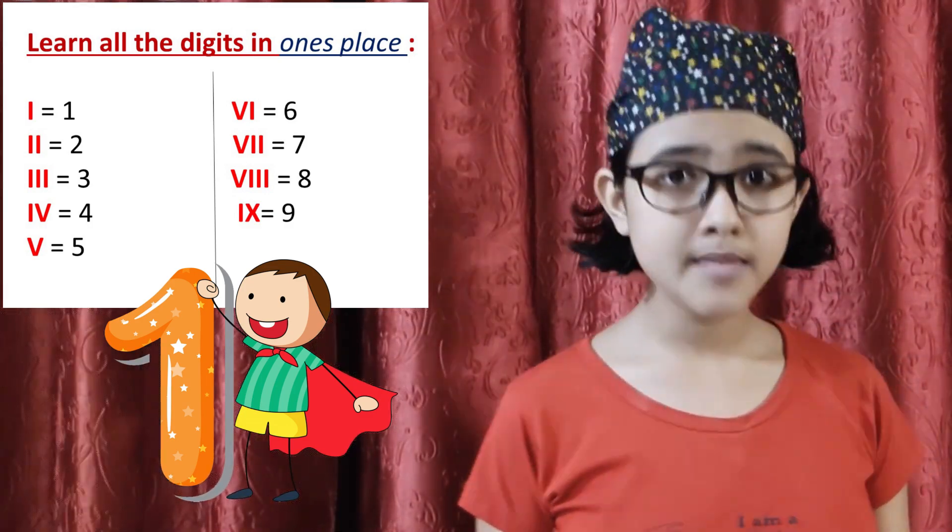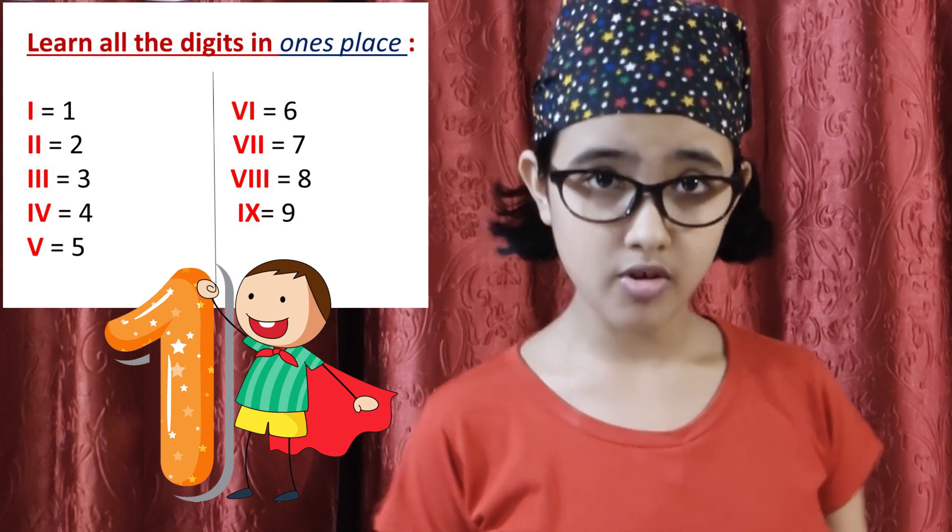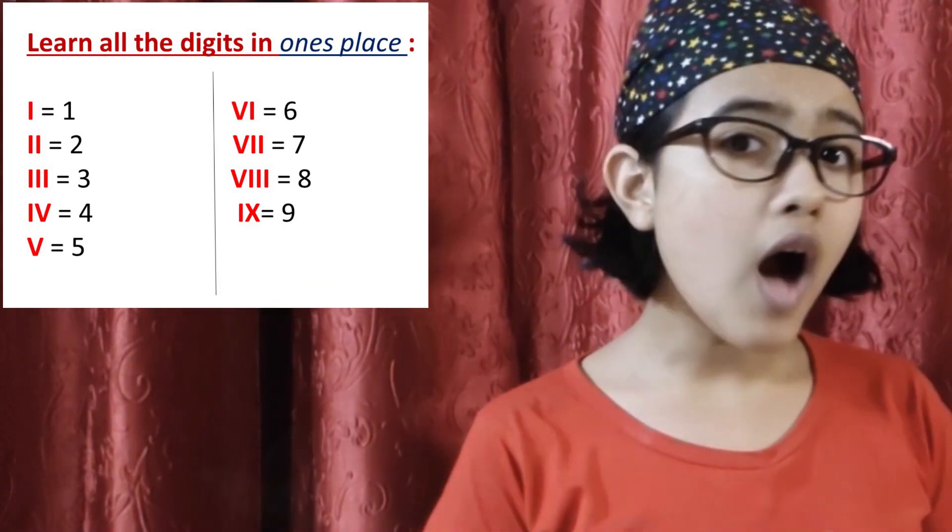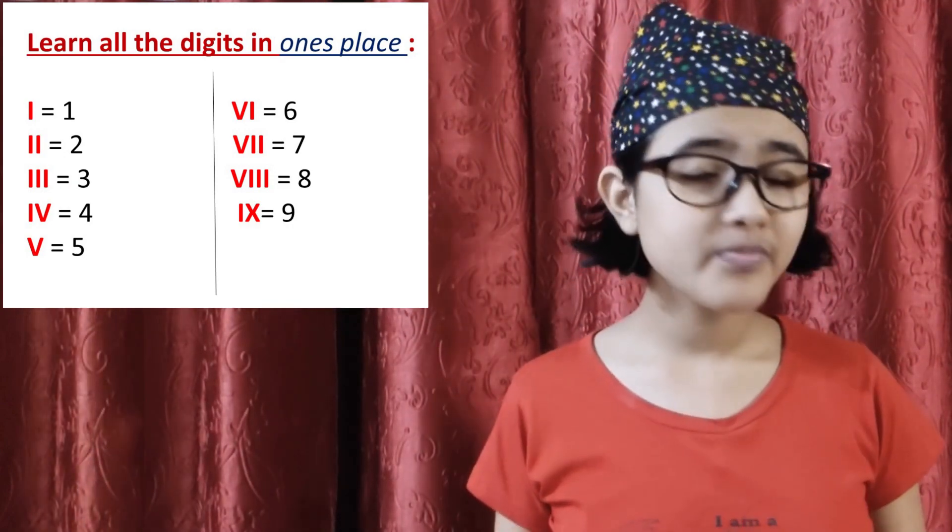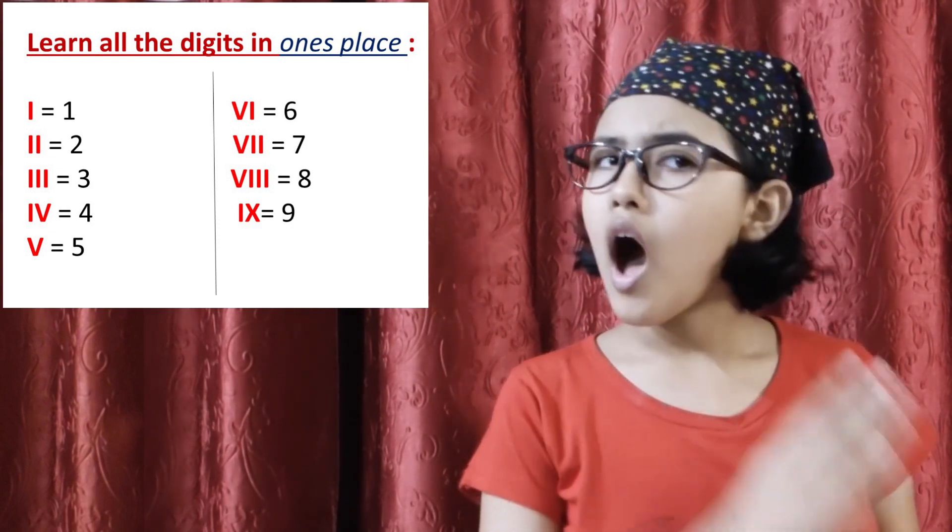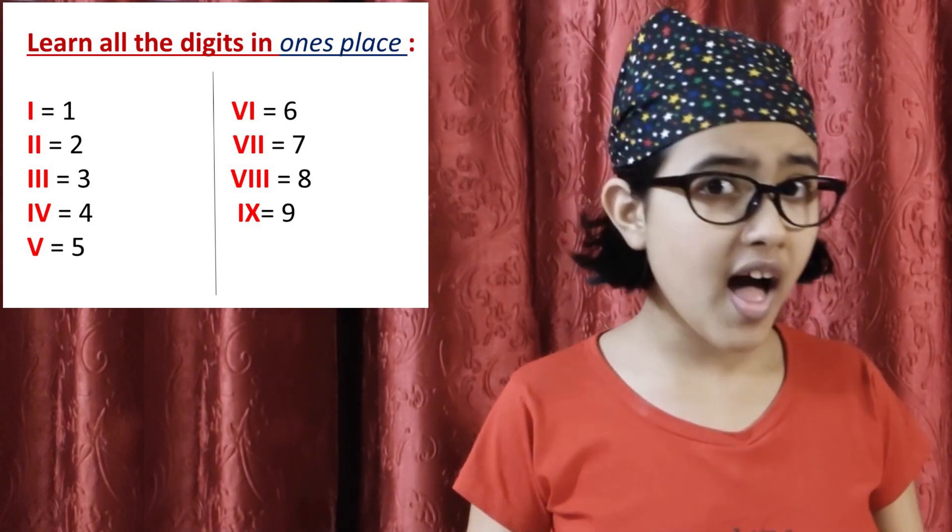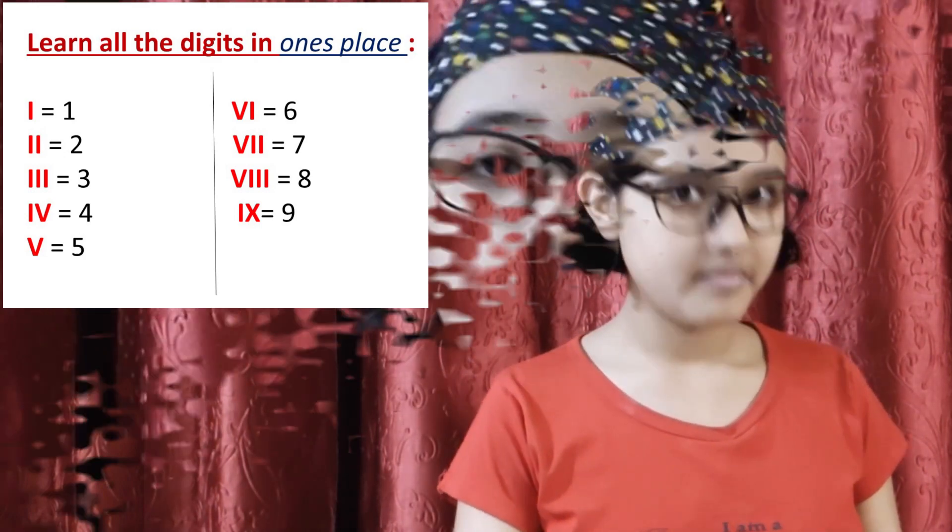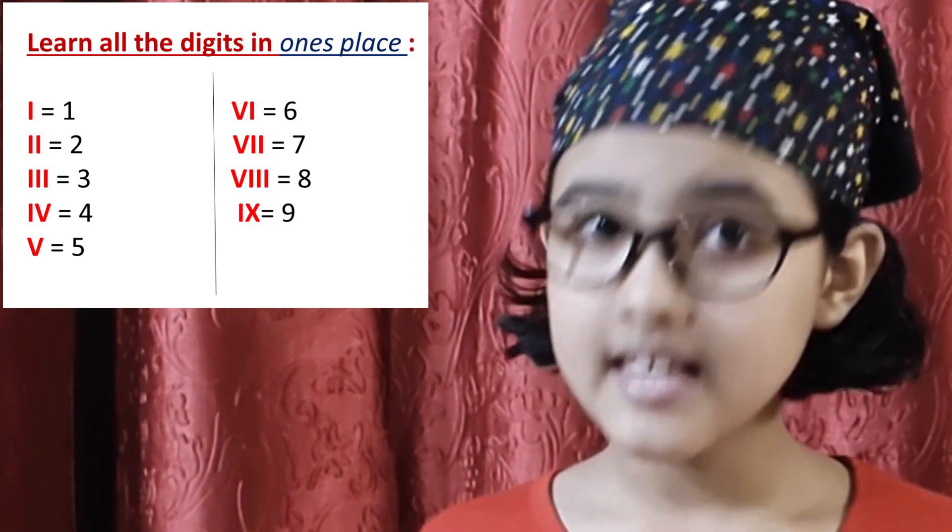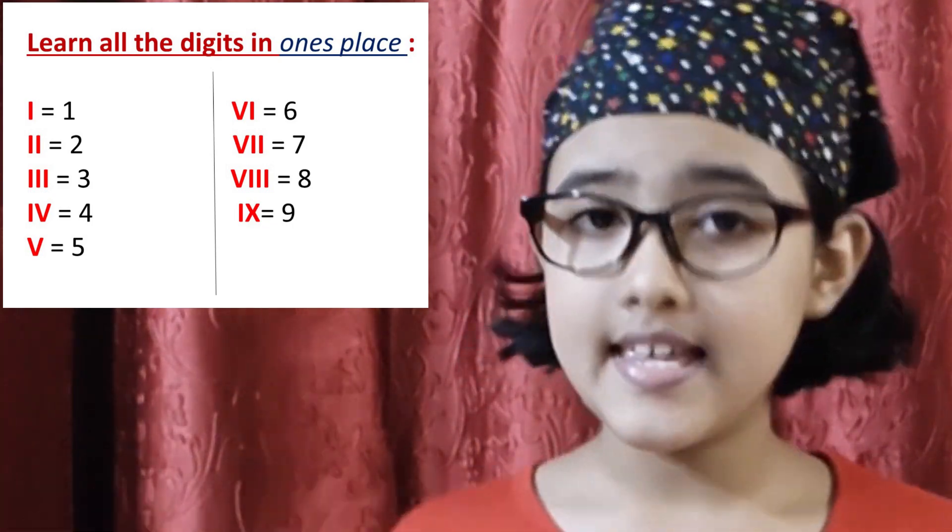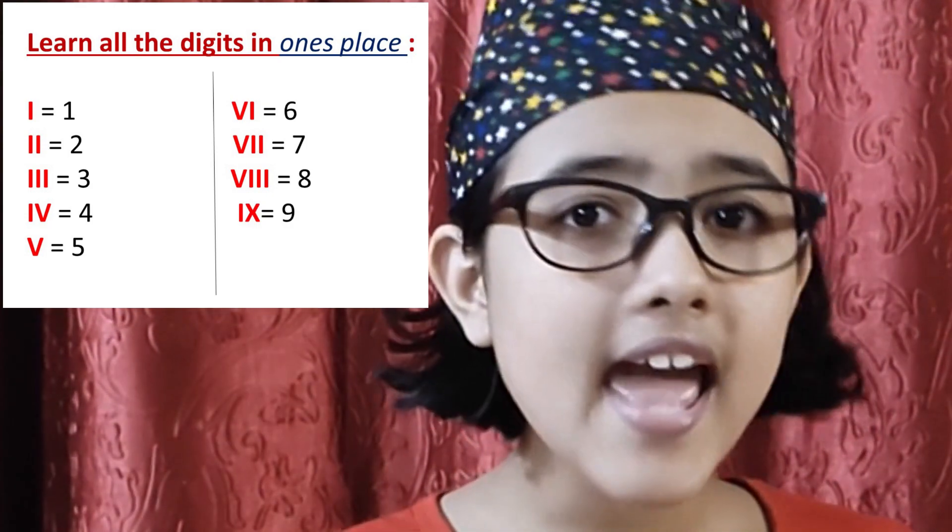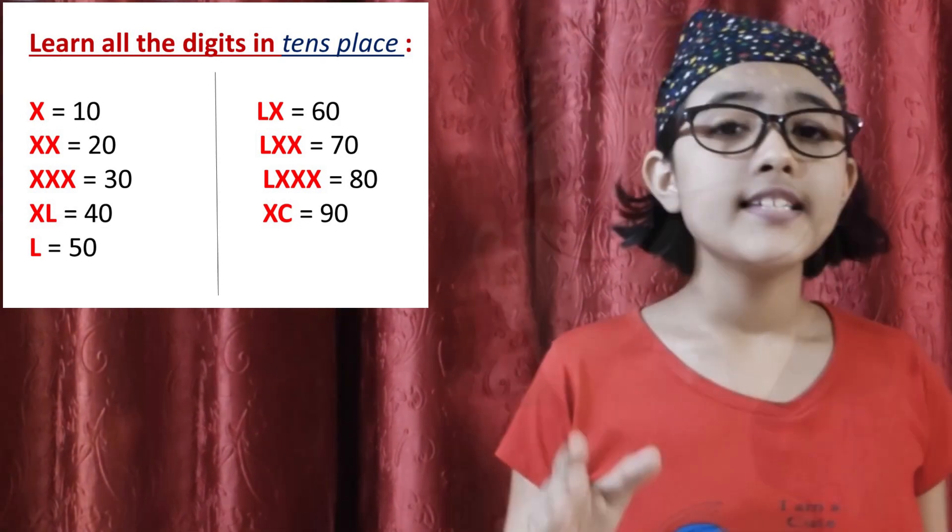The ones place digits in Roman numerals are: I is 1, if we give two I's, it will become 2. III is 3. Now, IV is 4 - why? I'll come to that later. V is 5, VI is 6, VII is 7, VIII is 8, and IX is 9.